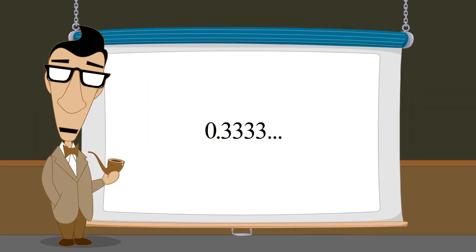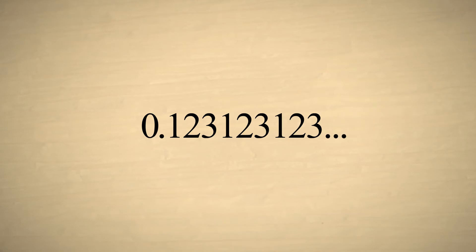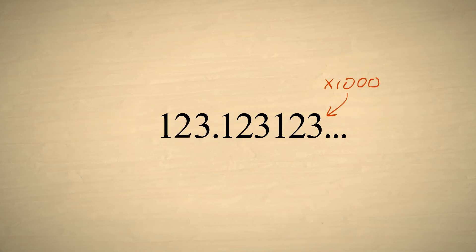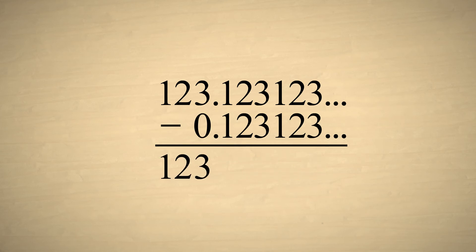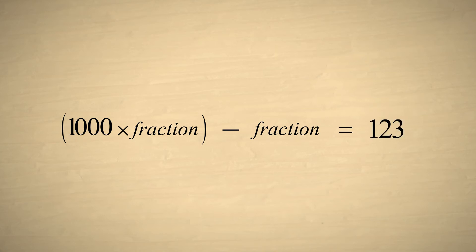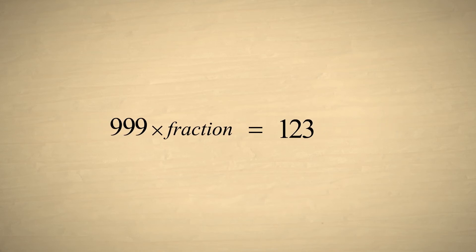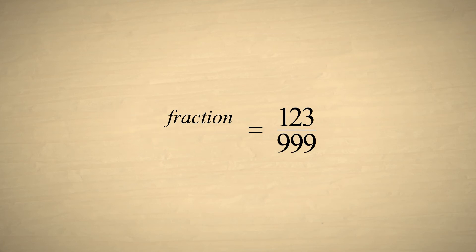Now, instead of a single repeating digit, let's convert a decimal number with a repeating sequence of three digits. Since there are three repeating digits to eliminate, we must shift the number three columns to the left by multiplying it by ten three times, which is the same as multiplying by one thousand. We then subtract our original number, which eliminates the repeating digits. We write this as an equation: one thousand times the fraction minus the fraction equals one hundred twenty-three. This simplifies to nine hundred ninety-nine times the fraction equals one hundred twenty-three, so our fraction is equal to one hundred twenty-three over nine hundred ninety-nine.